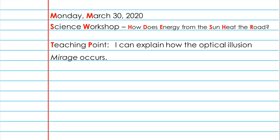Today is Monday, March 30, 2020. Our lesson name for today is, How does energy from the sun hit the road? Today's teaching point is, I can explain how the optical illusion mirage occurs.